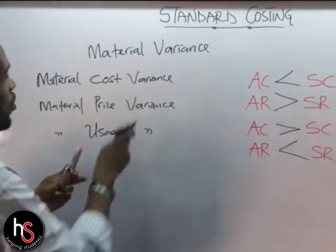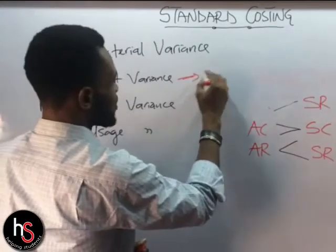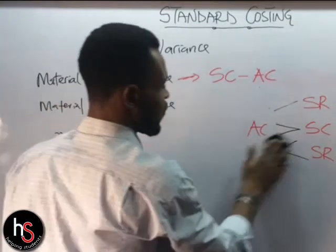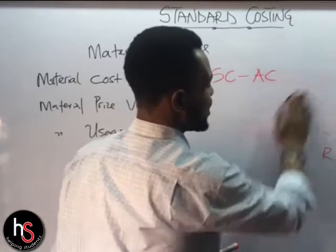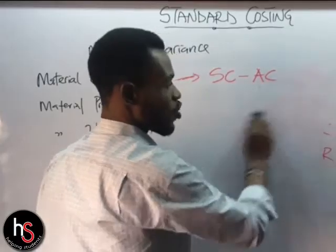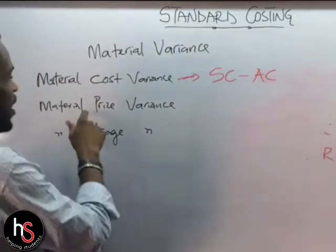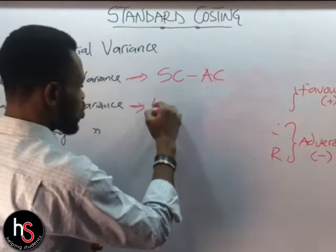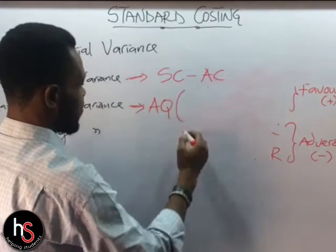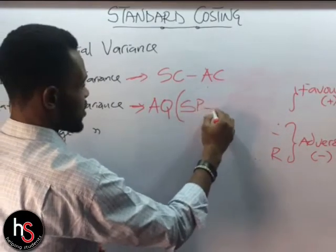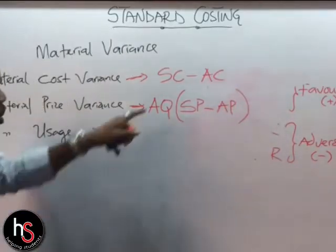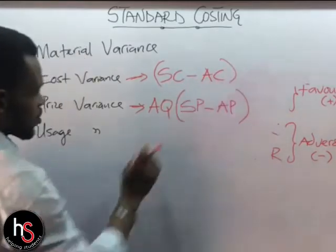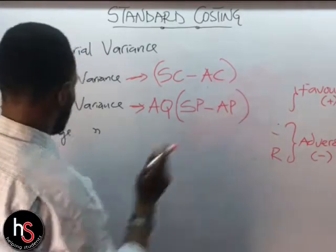Under material variance, the general principle is standard cost minus actual cost. For the material cost variance, this is the standard cost minus the actual cost. For the material price variance, the formula is: Actual Quantity × (Standard Price − Actual Price). Here we work with standard price and actual price.